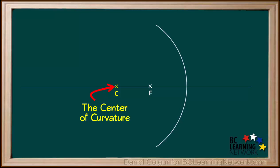The 2F point is also called the center of curvature C. If the arc of the mirror was extended to form a complete circle, point C would be the center of this circle.